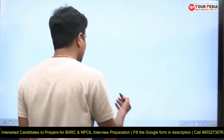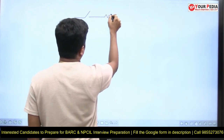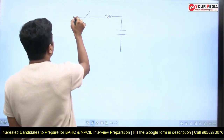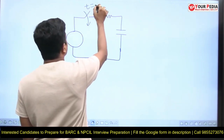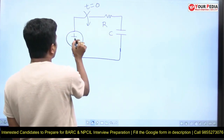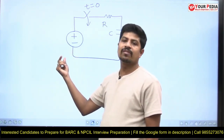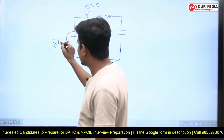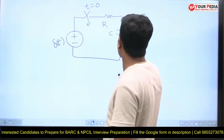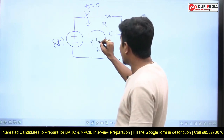The topic is transient analysis. I'm going to take one particular circuit — there is a switch, some resistance, some capacitance, and a voltage source. The switch is closed at t equal to zero. This is R, this is C. The voltage given is generally a DC step input, which everyone can analyze. But here the input given is an impulse — delta of t — and we are asked to draw the voltage across the capacitor and current in the circuit.